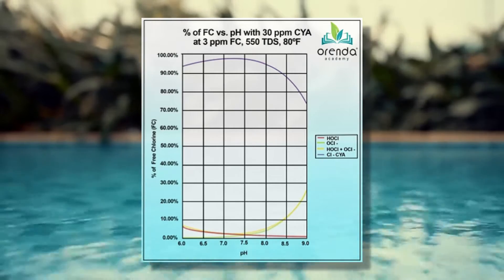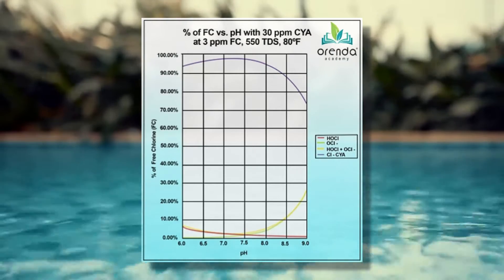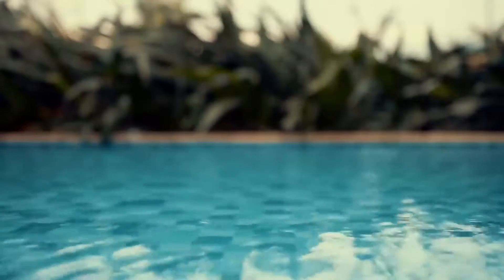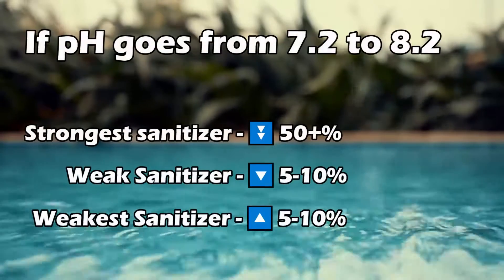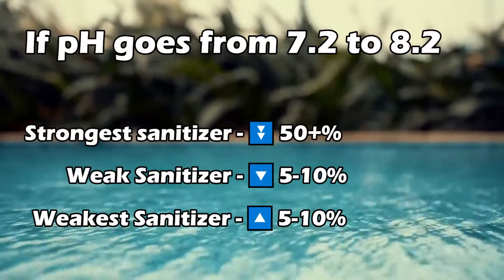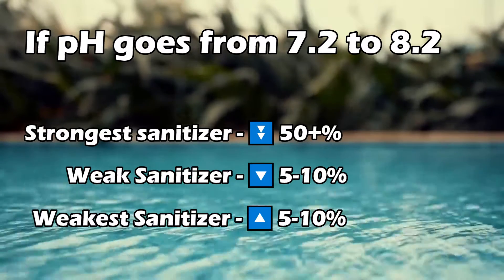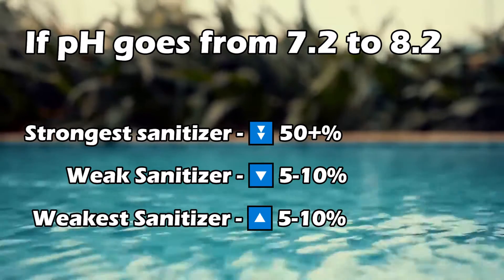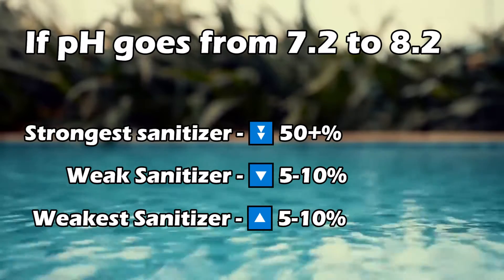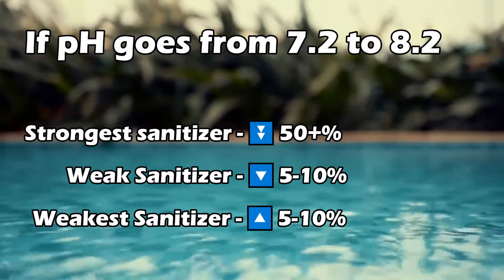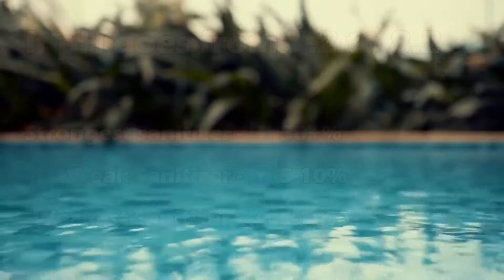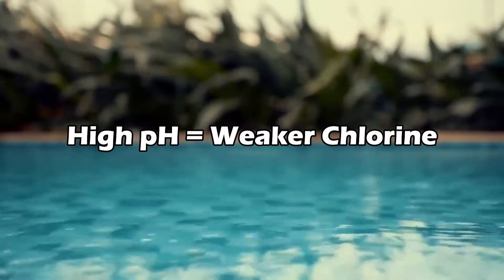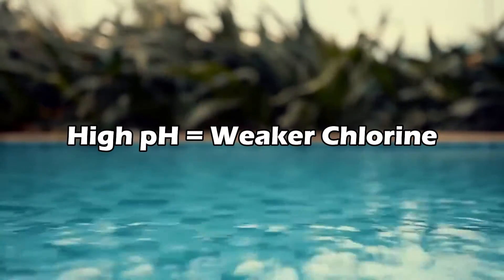So if we forget all the fancy chemical names and only focus on what is happening to the two most effective parts of our free chlorine, we can see that as the pH increases, both of those are reduced significantly and the weaker form of our sanitizer increases as that happens. In short, high pH equals weaker chlorine, regardless of how much of it you have in the pool.